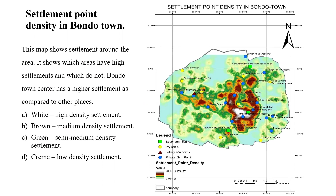I also created a kernel density map for Bondo town using those centroids. This map shows which areas have high settlement density and which do not. Bondo town center has higher density compared to other areas. Where the map shows white, the settlement density is very high. Brown, then green, indicates lower density settlement areas. Notably, most schools are located in areas of higher settlement density, with only about two or three exceptions.